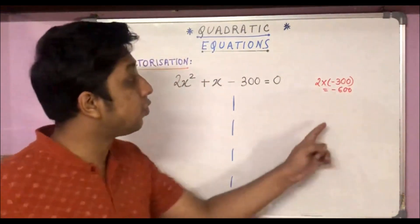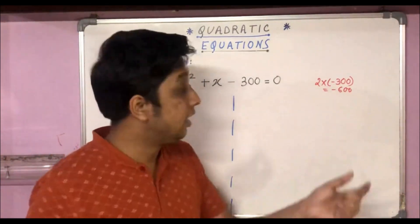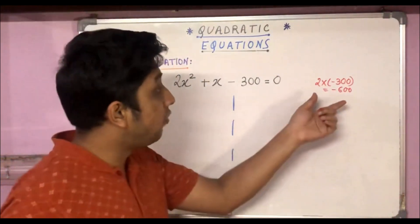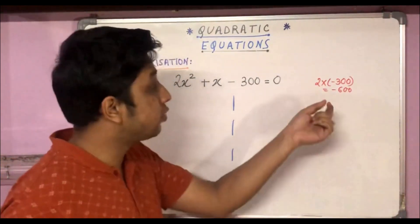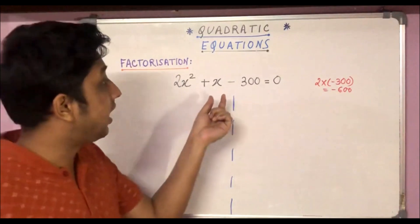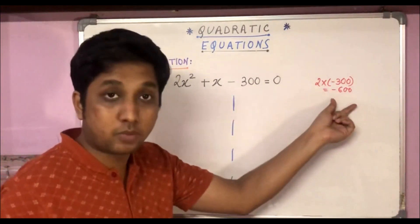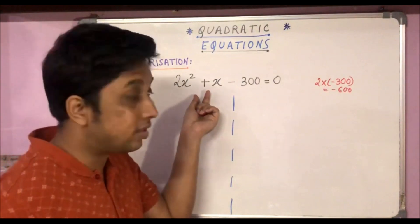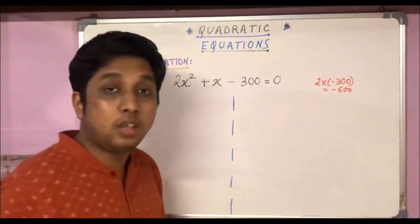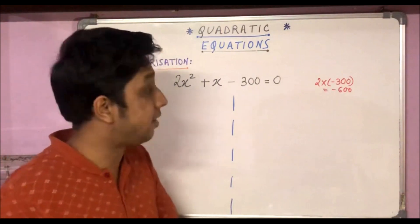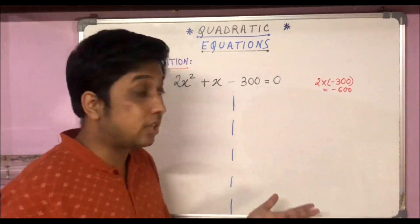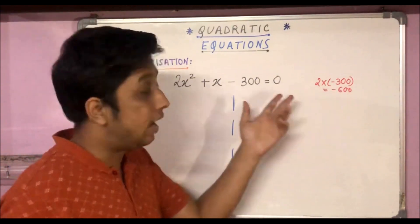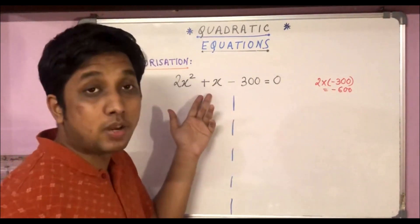And we need to find the factors of 600. Now 600 is a very big number with many factors. This is a very difficult process, especially to do in a short period of time, if we want to guess which factors have a product of minus 600 and a sum or difference of plus 1.